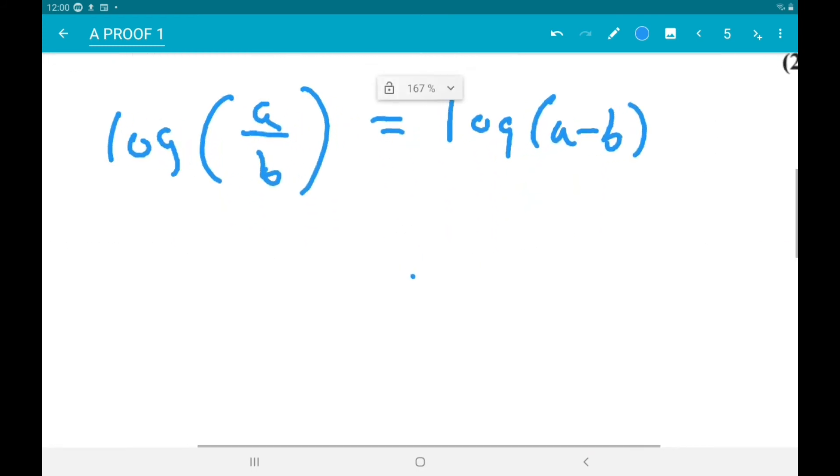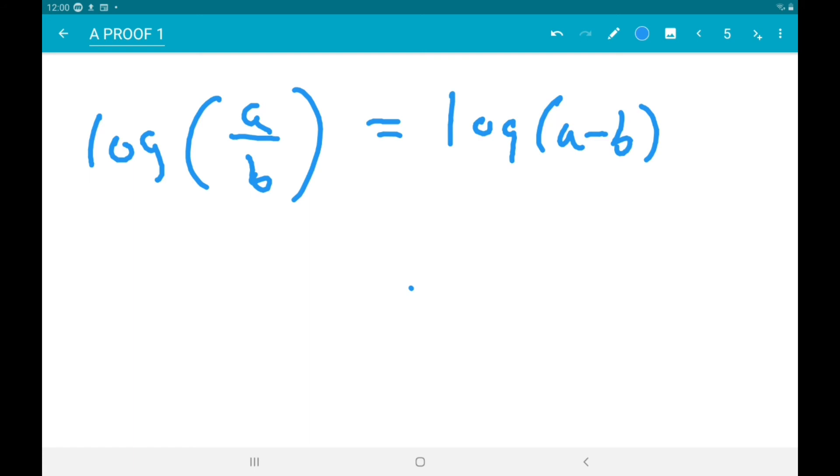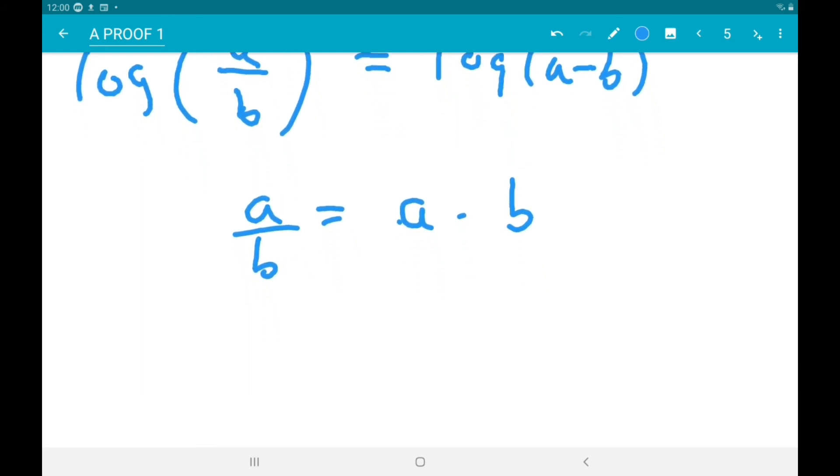Alright. Now, for this to be true, the insides of the logs must be equal. So, a over b is equal to a minus b. Alright. Now, multiply through by b. And we get a equals ab minus b squared.